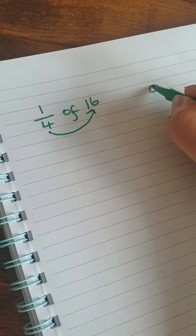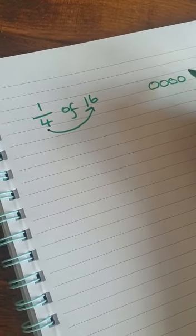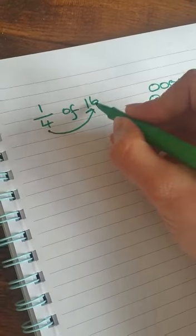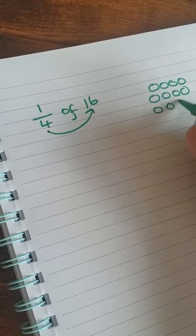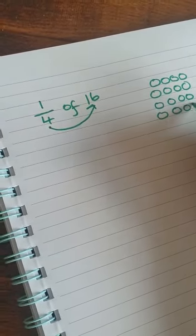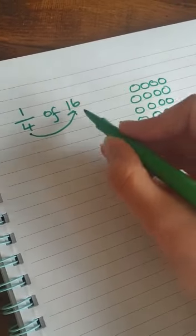So groups of four. One, two, three, four. Keep going. Five, six, seven, eight. Keep going. Nine, ten, eleven, twelve. Keep going. Thirteen, fourteen, fifteen, sixteen. We made it to 16.